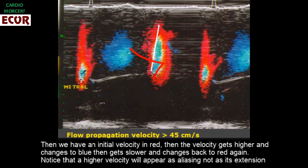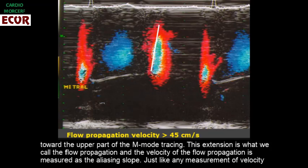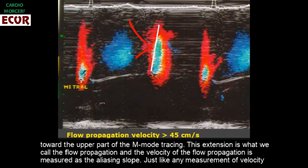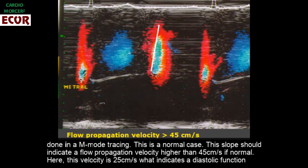Notice that a higher velocity will appear as aliasing, not as its extension toward the upper part of the M-mode tracing. This extension is what we call the flow propagation, and the velocity of the flow propagation is measured as the aliasing slope, just like any measurement of velocity done in an M-mode tracing.